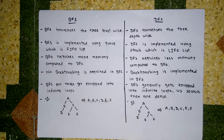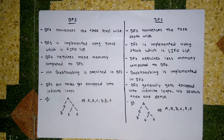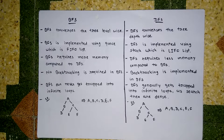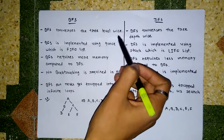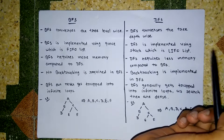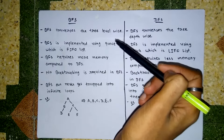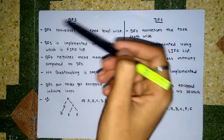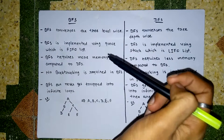Hello friends, welcome to Technology Begins. In this video I am going to show you the difference between BFS and DFS. These are the major parameters that show the difference between BFS and DFS. The first one is BFS traverses the tree level wise and DFS traverses the tree depth wise. In BFS we search level wise to find the goal node, and in DFS we search depth wise to find the goal node.